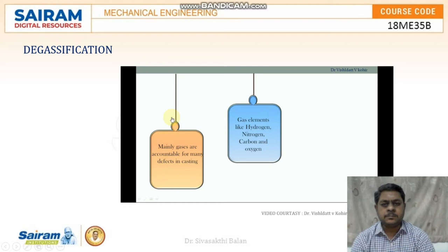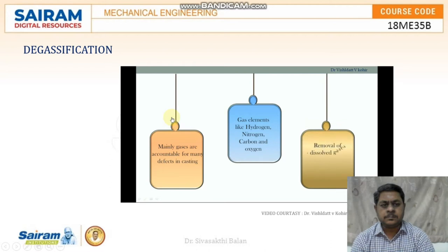In doing so, they form defects like blow holes and pin holes. Therefore, it is necessary to remove these elements from the molten metal. The process of removal is called degassing, and the method which is adopted is called degasification.